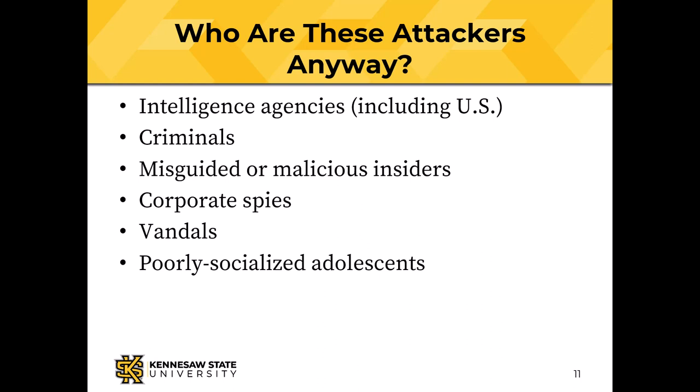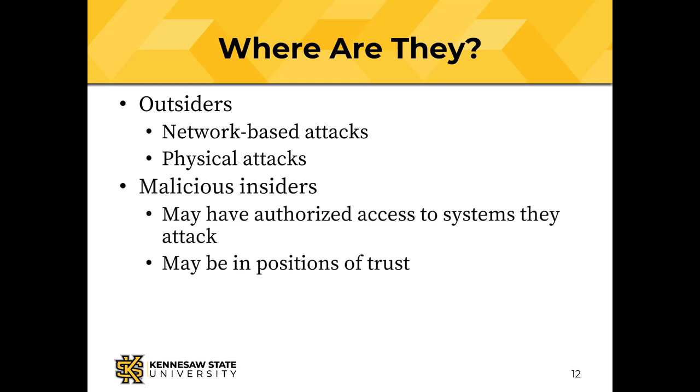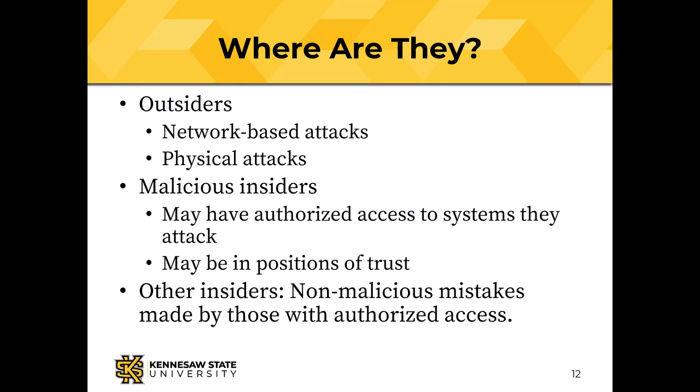Poorly socialized adolescents fit the classic image of the hacker — some guy in his parents' basement with the lights off — but they're kind of in the minority when we worry about these things. Outsiders could implement network-based attacks, since almost everybody is network-connected now, but there can also be physical attacks. Malicious insiders might have authorized access and be in positions of trust. And then there are other insiders who make non-malicious mistakes — like confidently deleting a file and then saying 'oops.' That's still data loss.